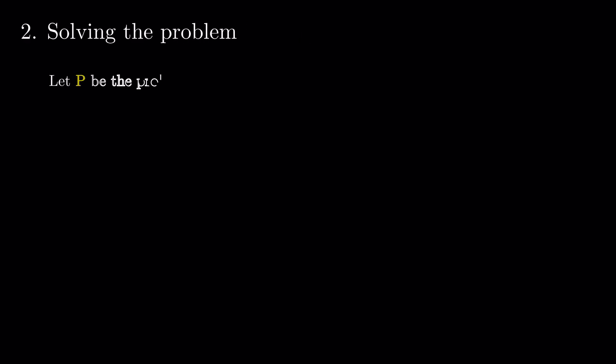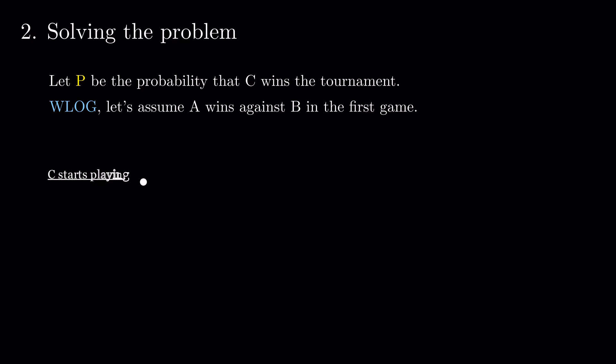Let P be the probability that C wins the tournament. We can assume, without loss of generality, that A wins the first game. Let's look at potential paths, starting from the point where C starts playing.